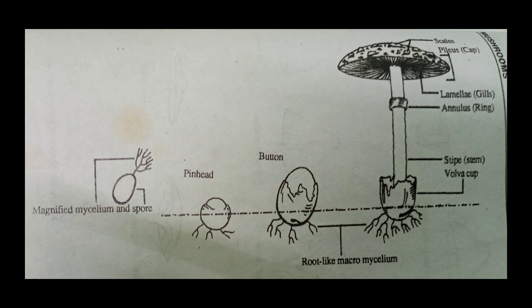The pileus or cap begins to open up in a later stage, which is an expanded umbrella-like structure supported by a striped stem. The pileus may be thick, fleshy, membranous or corky, and varies greatly in shape, size and color.